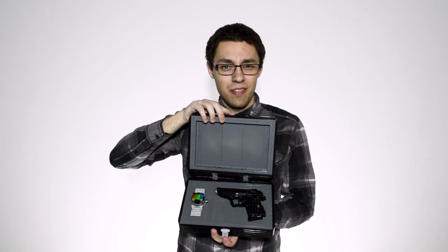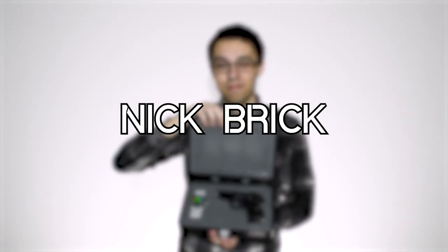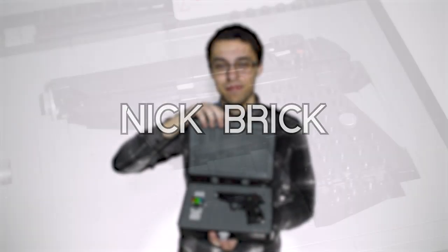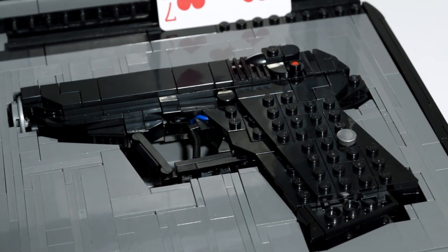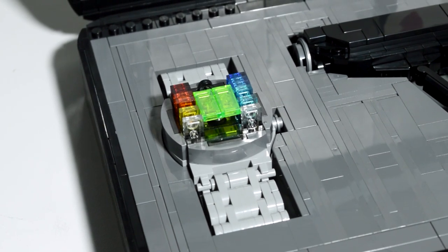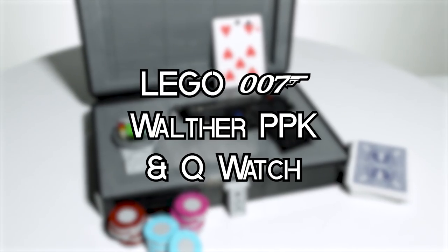Were you expecting an exploding pen? We don't really go for those anymore. Hey everyone, Nick Brick here with the 007 build. The signature handgun used by James Bond, as well as the iconic watch from the classic shooter GoldenEye. Here's the Lego Walther PPK and the Q watch.